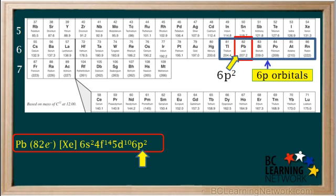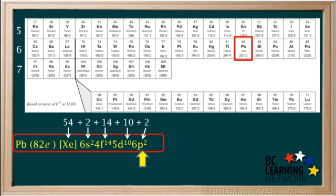So we finish lead's configuration by writing 6p² here. Adding these last two electrons now gives us a grand total of 82 electrons, the number of electrons in a neutral atom of lead. So this is now the core notation for lead.